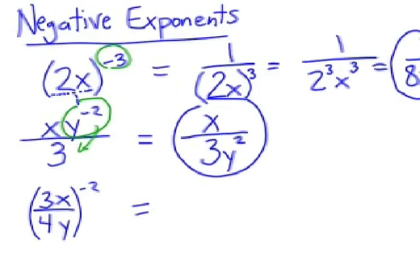Third example, the whole fraction is to the negative power. Notice the parentheses. If it's already a fraction, and you're raising it to a negative power, the quickest and simplest way of thinking about it is to flip the fraction, write the reciprocal.